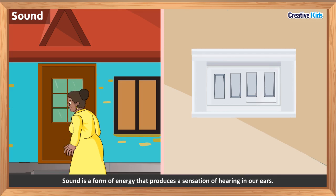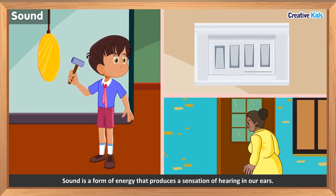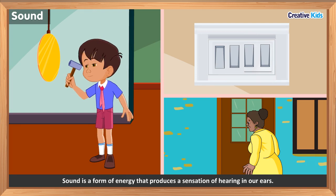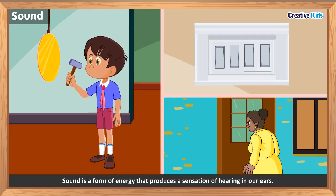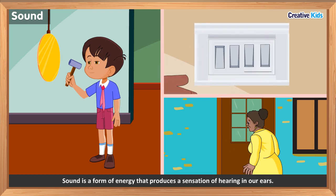But how does this happen? Let us understand this. What happens when we ring the school bell or doorbell? Yes, a sound is produced, and by hearing that sound we get to know that the period is over or someone is standing at our door. But what is sound?